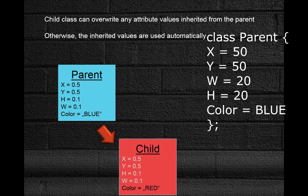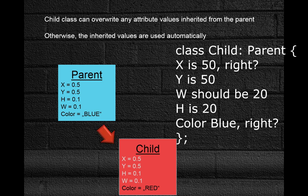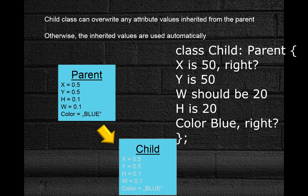We know that this class when represented will always be at these coordinates with height and width of 20 and it will be blue. A child class automatically inherits all of these settings, meaning that without any further changes every child of this parent will also appear at 50,50 coordinates, will be 20 units wide and high, and will be blue. However, these attributes can now be understood as default settings.